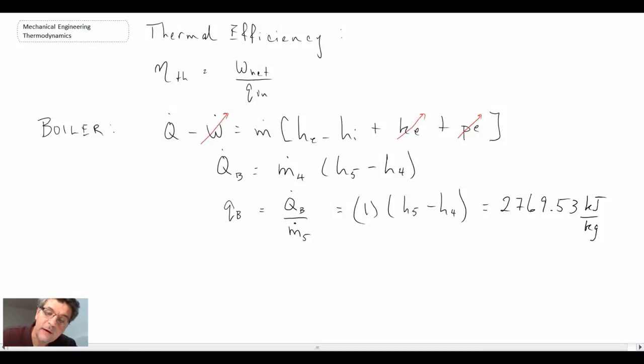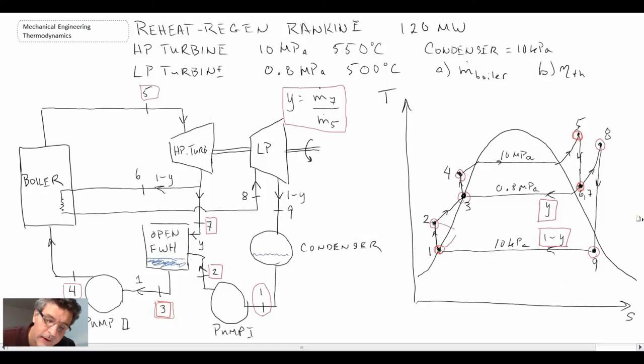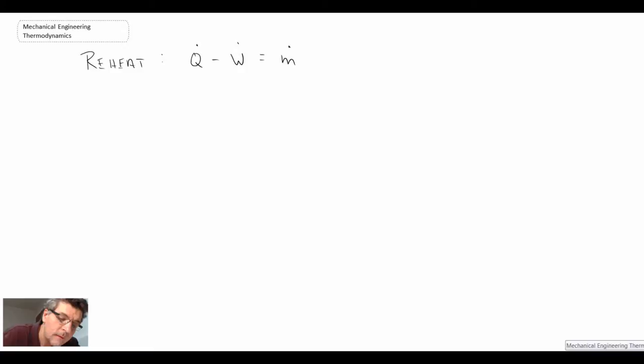The reheat cycle. So let's take a look at the equation for the reheat. Again, that will be the first law applied to the reheat cycle. And in this case, the mass flow rate that we're dealing with is M6, because that is what is flowing through the reheat.